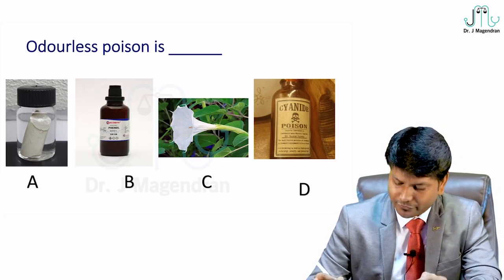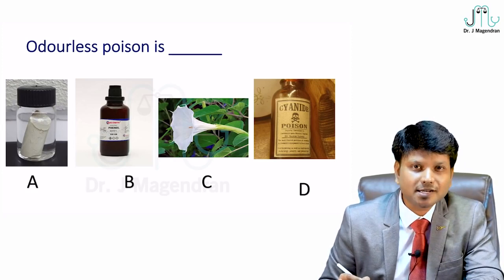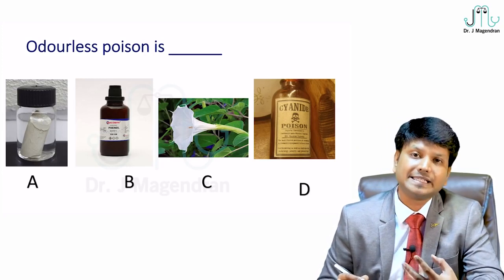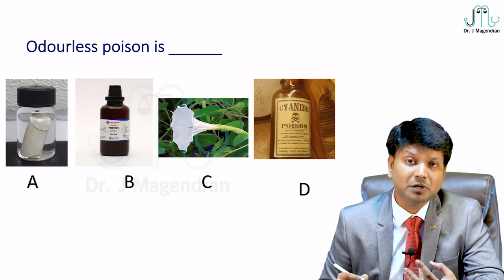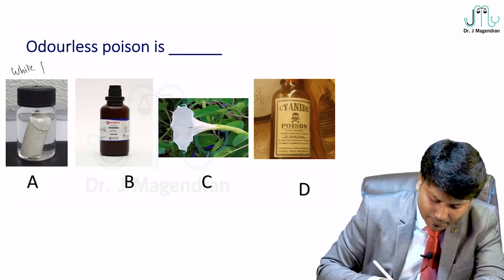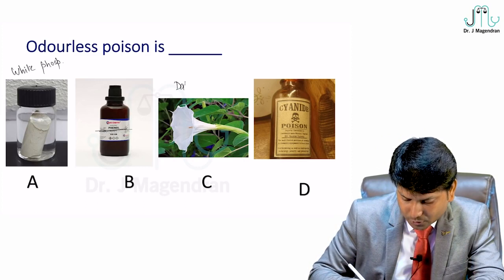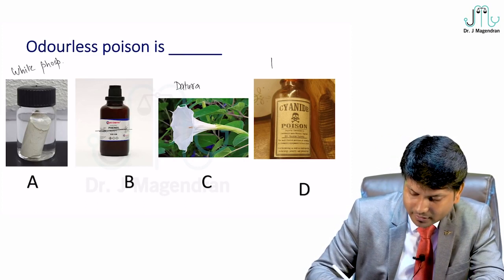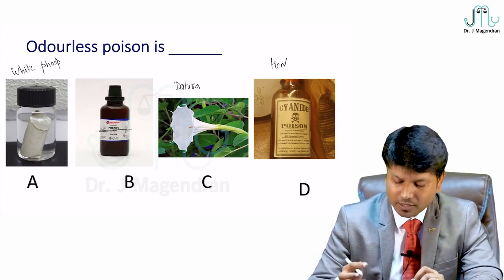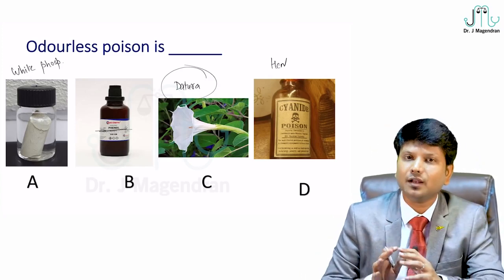Odorless poison question: the four options are white phosphorus (crystalline, kept under water due to spontaneous combustion tendency), Phenol, Datura, and Cyanide (hydrogen cyanide). Which of these is odorless? Datura is odorless — without any smell. Let's learn the smells of different poisons: cyanide has bitter almond smell; cannabis smells like burnt rope.